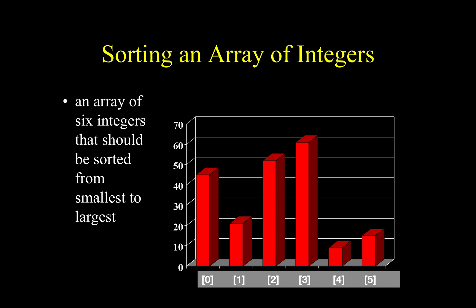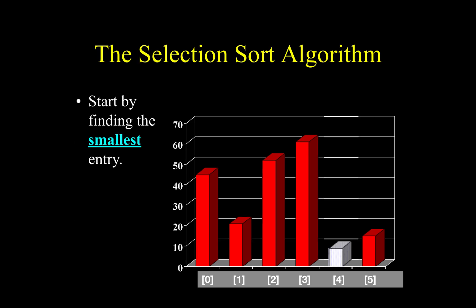We have a set of integers here as indicated. At the zeroth index you have an integer somewhere around 40 to 50, then next you have 20, 50, 60, 10, and somewhere around 10 to 15. You have six integers. If you are using selection sort, you start by finding the smallest entry.